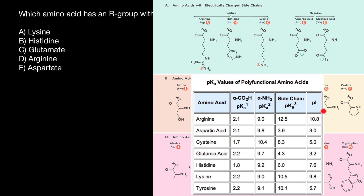The last column, PI or isoelectric point, tells us that this amino acid will be neutral at pH 10.8. About 50% of these amino acids are going to be neutral.